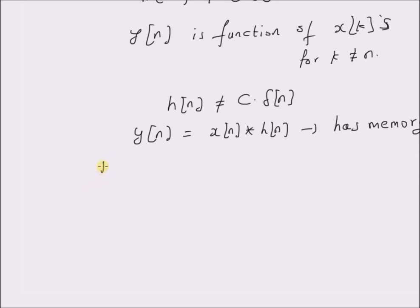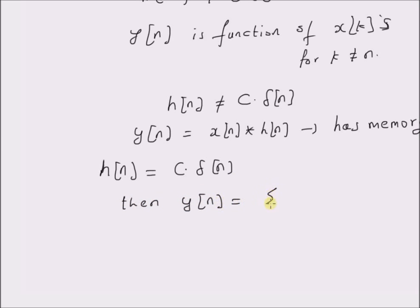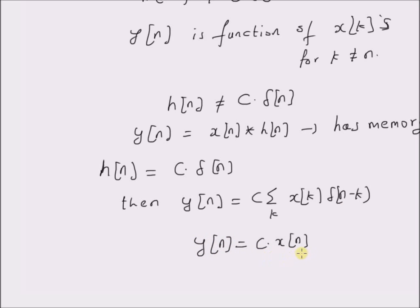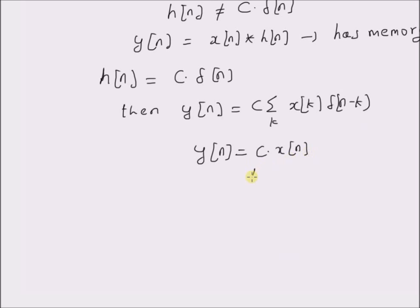However, when the impulse response h of n is equal to a constant c multiplied by the impulse signal delta of n, then y of n is equal to the sum of x of k multiplied by delta of n minus k into the constant c, which is basically equal to c times x of n because of the shifting property of the impulse signal. So in this case, y of n is just a function of the current input x of n. Moreover, for a linear system, it is just a multiple of the current input. So this is a memoryless LTI system.